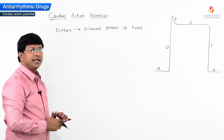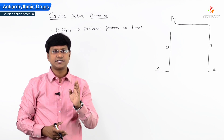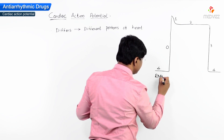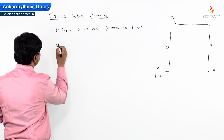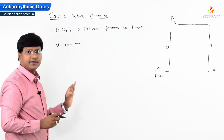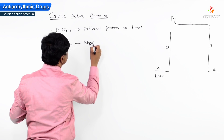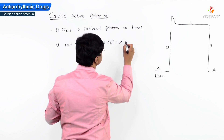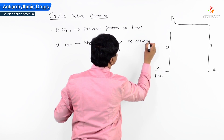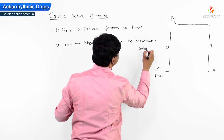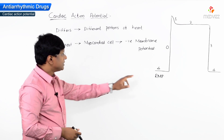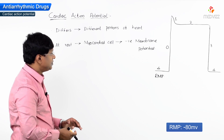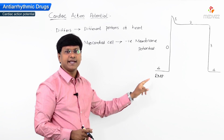In a resting state, the myocardial cell has a negative membrane potential. This is the RMP — the resting membrane potential. At rest, the myocardial cell has a negative membrane potential, which might be around minus 80 millivolts.